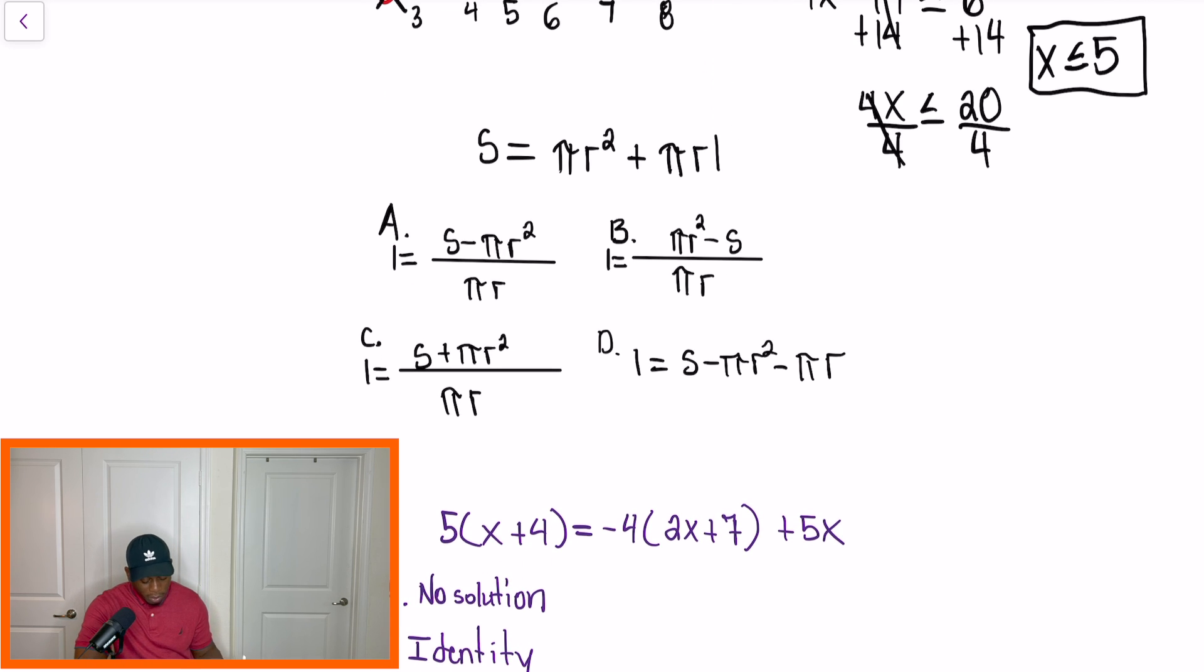All right, so our next problem, we're focusing on how to rearrange equations. And they're basically asking us to solve for L. So we're trying to solve the equation for L. So what I'm going to do, I'm going to come out to the side, I'm going to rewrite this equation, and we're going to figure out how can we manipulate this equation so that we can get L by itself. So the first thing I'm going to want to do is I'm going to subtract pi R squared. So when I subtract pi R squared from itself, I'm going to have, and I'm going to do it on the other side as well too, so everyone's with me. So after the first step of subtracting, we're going to have S minus pi R squared is equal to pi R L.